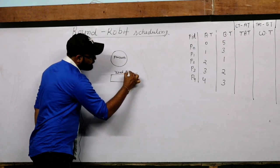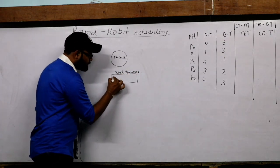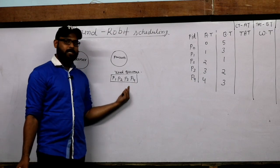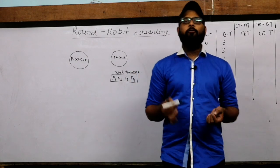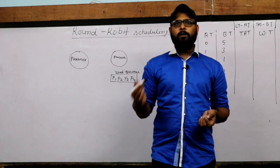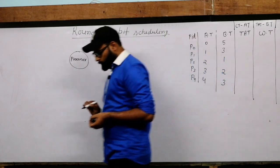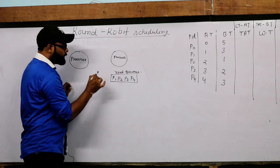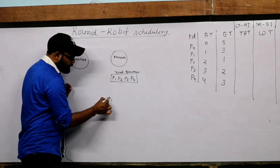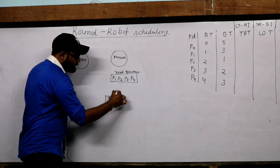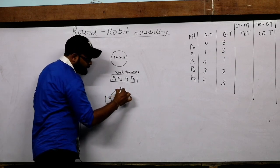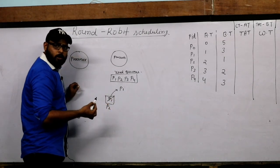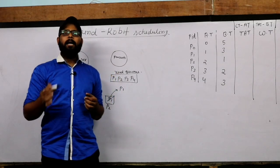All the processes reside in the ready queue — P1, P2, P3, P4 — all are processes, and they are waiting for their execution, waiting for the CPU. In the Round Robin scheduling algorithm, process P1 executes first, then context switches from the processor, and the next process P2 runs on the CPU. Again P2 context switches from the processor, and this happens again and again in a round fashion.